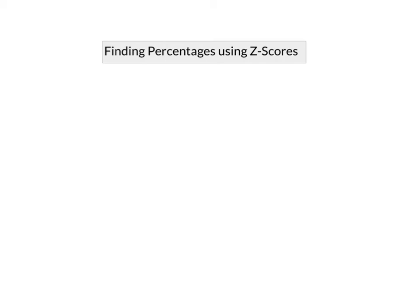So we're going to find percentages here using Z-scores. We've used Z-scores in the last two classes. Now we're going to use how they're actually made to work out percentages and then, of course, probabilities after that.